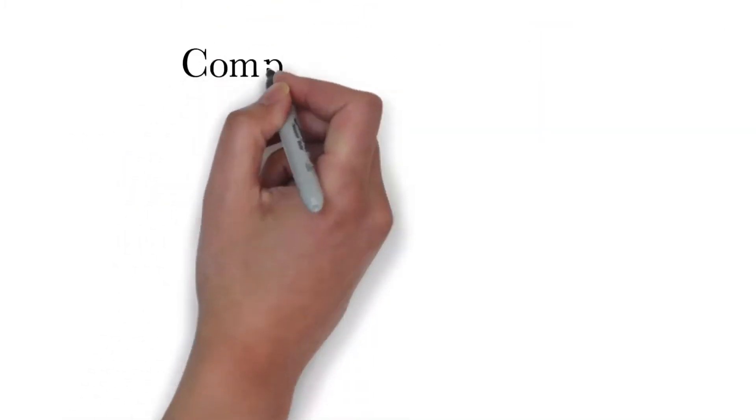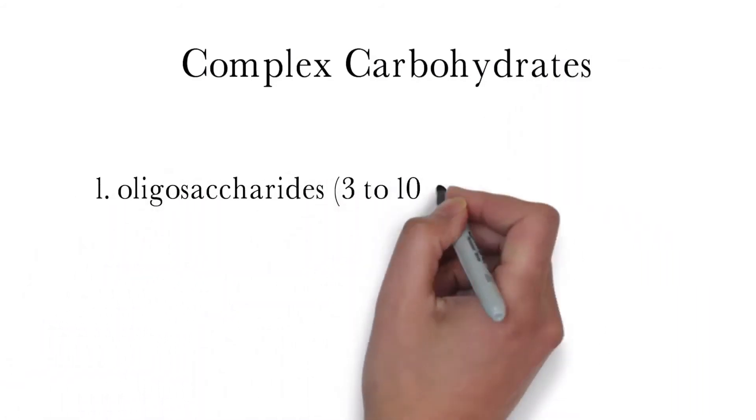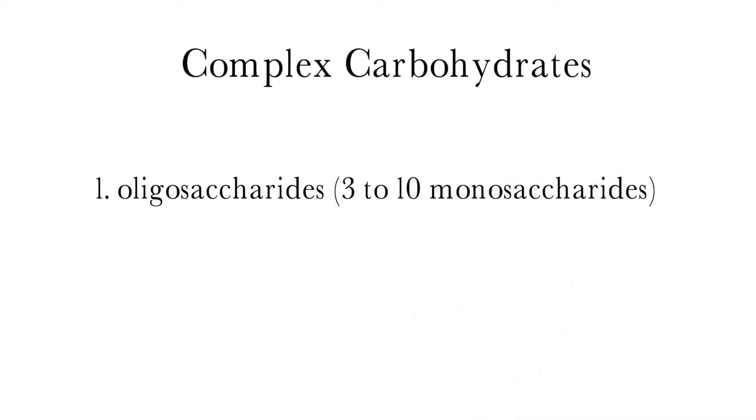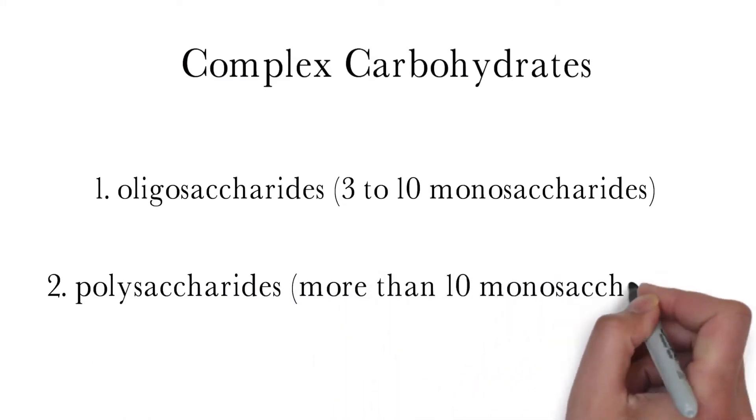Next, we have the complex carbohydrates. There are generally two types. The first are called oligosaccharides, which consist of 3 to 10 monosaccharides. The second type are called polysaccharides, which consist of any molecule made out of more than 10 monosaccharides.